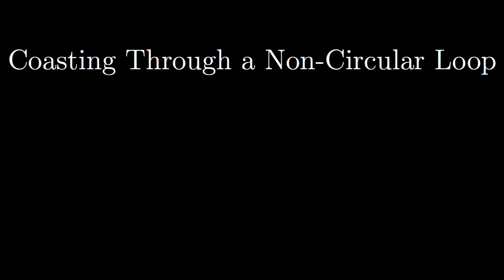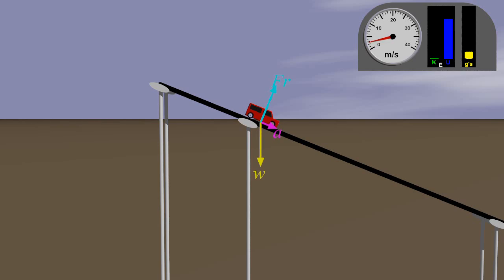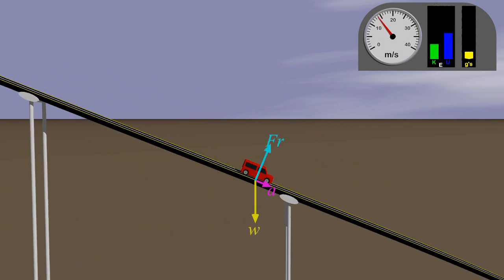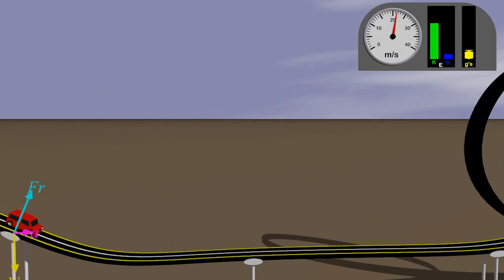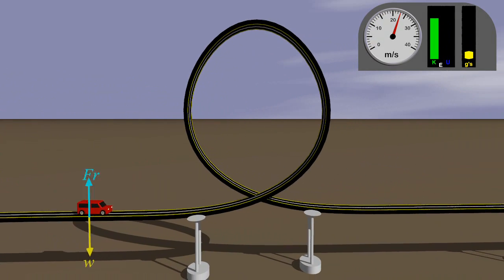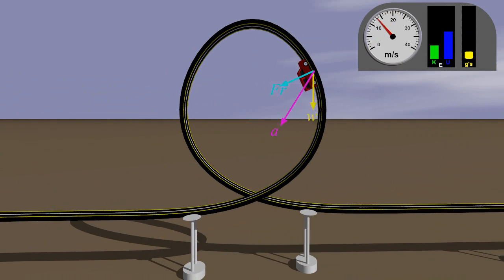It turns out that most looping coasters do not use a circular shape. Amusement park loops will generally have a greater radius of curvature at the bottom of the loop where the speed is greatest. This allows the g-forces experienced by the riders to be evened out over the course of the loop.